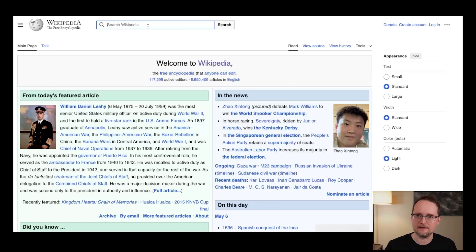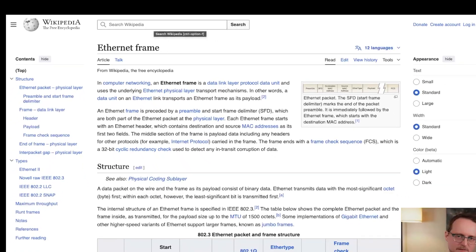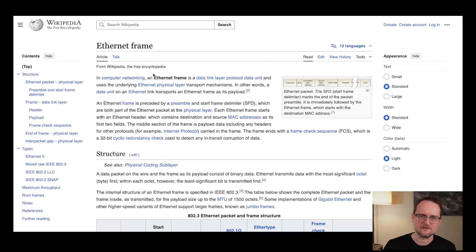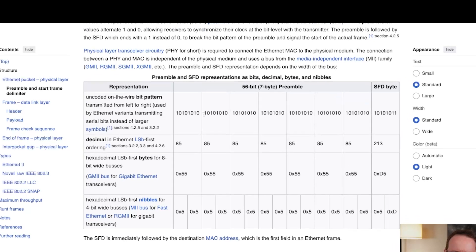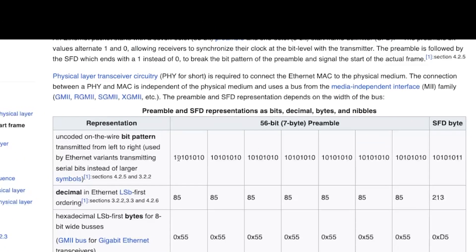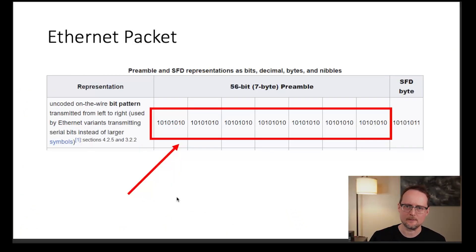If you go to Wikipedia and you type in Ethernet frame, you'll land on a page that looks something like this. Further down the page you'll see a section that outlines a pattern of ones and zeros that actually start the communication between computers. See if we can find it. Here it is. So each one and zero here is called a bit and if you group together eight ones and zeros you get a byte.